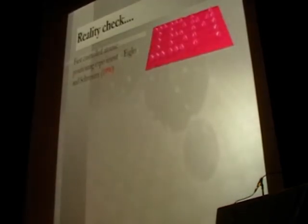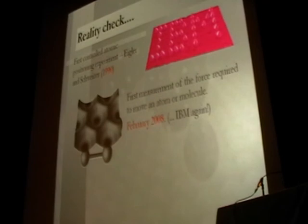So let's just put that in context. When I mention this, you know, by 2030 we're going to have nanobots flooding our consciousness. Let's just have a reality check. The first controlled atomic positioning experiment by Eigler and Schweitzer, where they drew up this IBM logo from individual xenon atoms, 1990. The first measurement of the force, basically a repetition of that experiment, but using a different microscope, using a different technique, atomic force microscopy, where you can measure directly the forces, and thus where you're getting close to Drexler's ideas, February 2008.